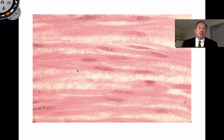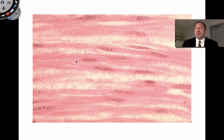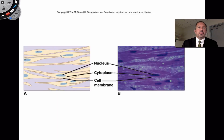Here's what smooth muscle looks like under the microscope. Notice there are no striations in smooth muscle — one nucleus per cell. This is a drawing of smooth muscle, and this is what it looks like with a darker purple stain, with the nucleus shown here in blue.